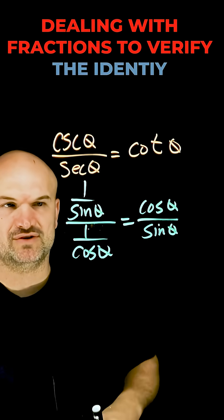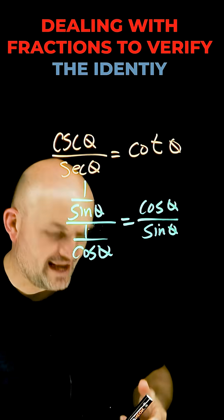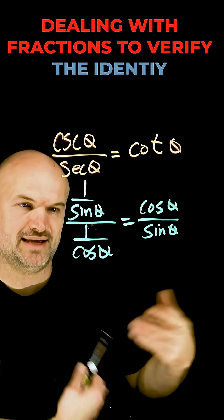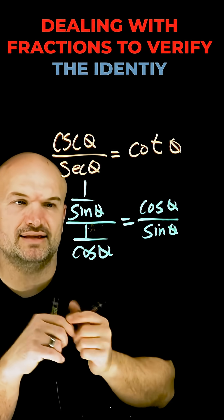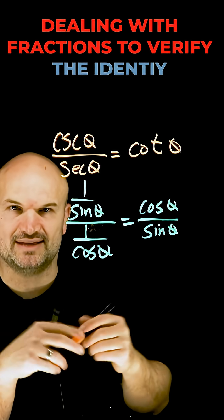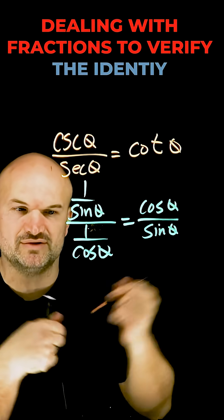So what we have here is 1 over sine divided by 1 over cosine. One thing I like to do with my students is when they get confused applying an algebraic process with trigonometric functions, I say forget about that, just rewrite it using numbers.